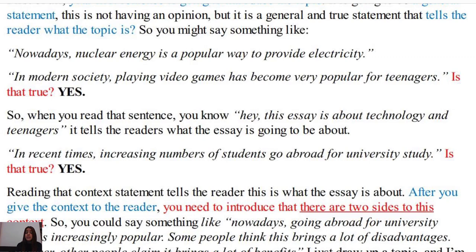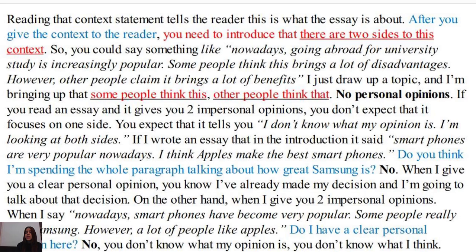That context statement tells the reader what the essay is about. After giving the context, you need to introduce that there are two sides. For example: 'Nowadays, going abroad for university study is increasingly popular. Some people think this brings a lot of disadvantages; however, other people claim it brings a lot of benefits.' You're presenting two impersonal opinions — no personal opinion. If you read an essay that gives two impersonal opinions, you expect it to look at both sides objectively.